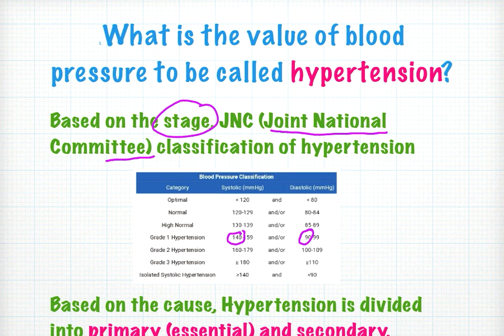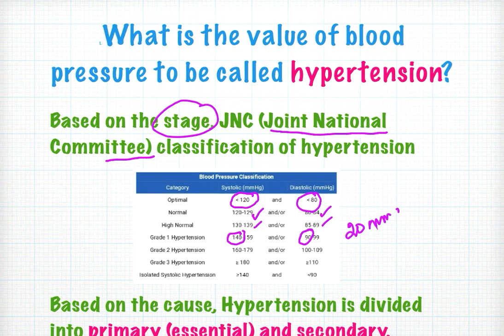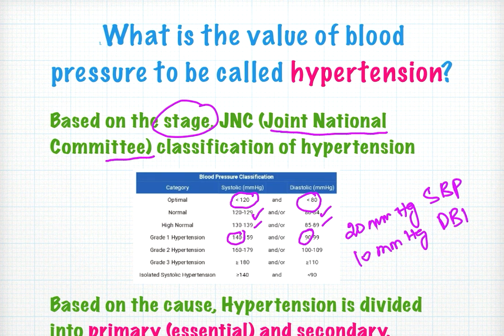The optimal pressure is less than 120 mmHg systolic. Normal is 120 to 129 systolic and 80 to 84 diastolic. High normal is 130 to 139 systolic and 85 to 89 diastolic. We increase 20 mmHg in systolic and 10 mmHg in diastolic blood pressure for each successive grade.